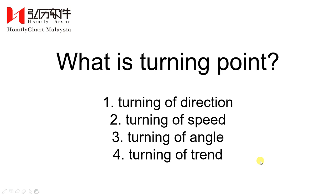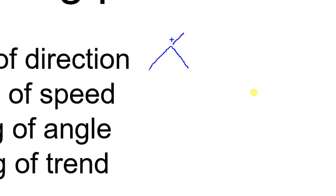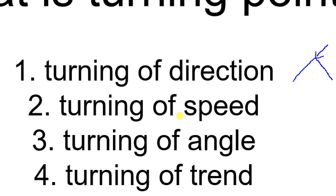Turning of direction — what's the meaning of turning of direction? Turning of direction means turning from uptrend to downtrend. Then this point will be a turning of direction turning point. Or turning from downtrend to uptrend — then this point will also be a turning point, turning of direction.